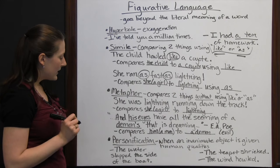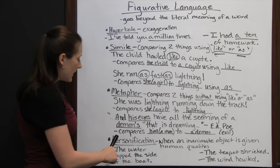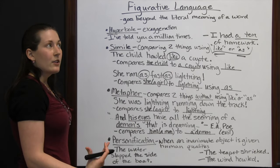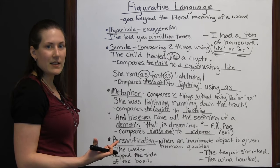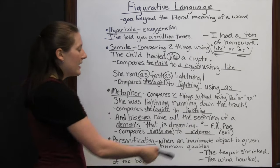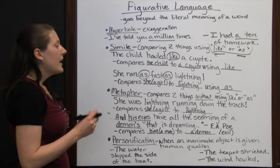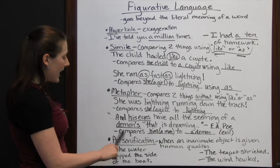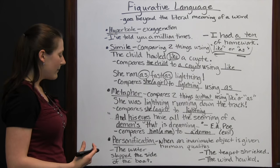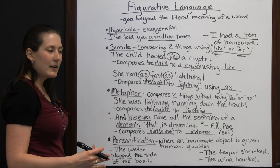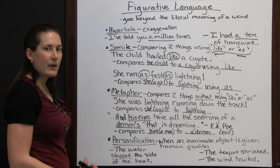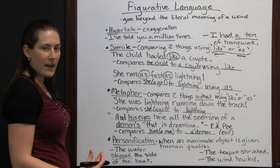The last piece of figurative language we're going to discuss is personification, which is when an inanimate object is given human qualities. Inanimate objects are things that are not alive — a chair, a teapot, the wind, water. For example: 'The water slapped the side of the boat.' Water can't actually slap like a person would slap, but it makes you think of the action and sound of slapping as you picture this water hitting the side of the boat.